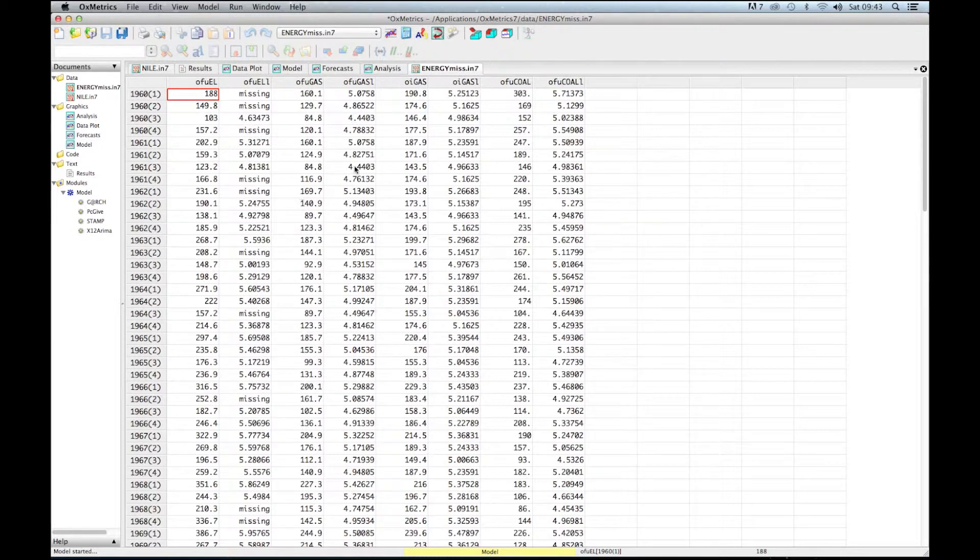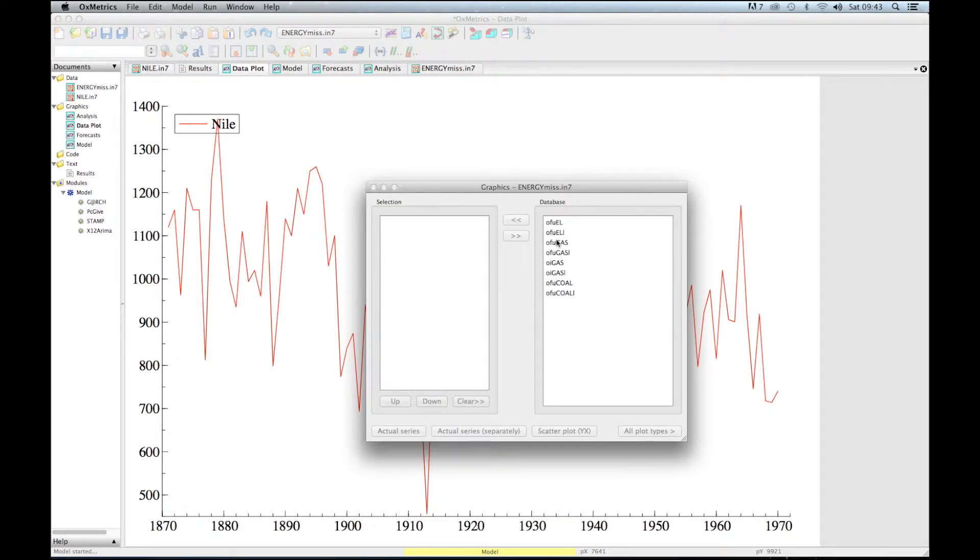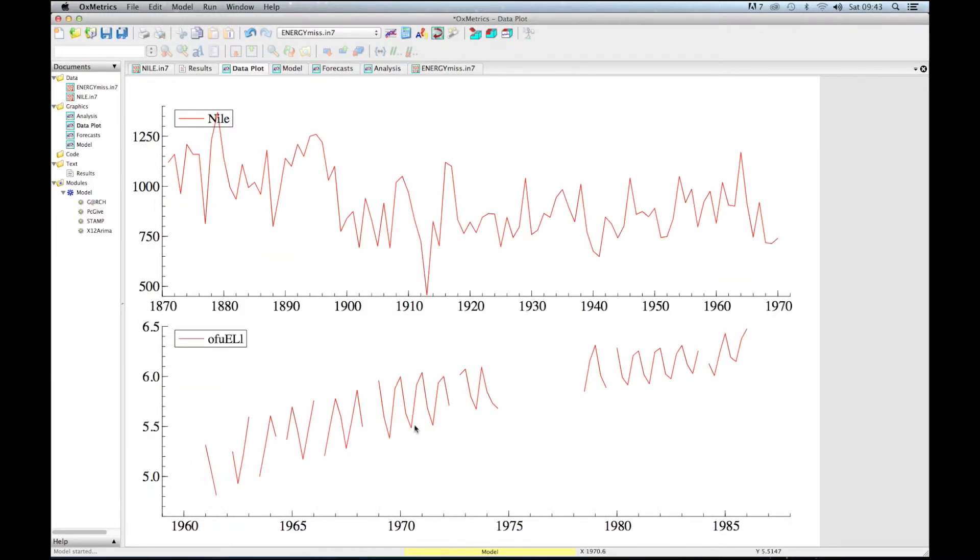The data is also seasonal, and that's something we can show by the graphical device. So here we select the second time series because that is the one that I want to analyze. I will delete this now—as you can see, we can easily edit all the graphics.